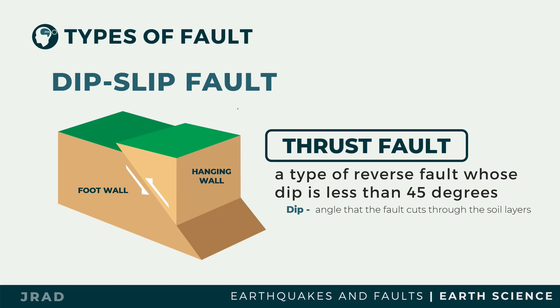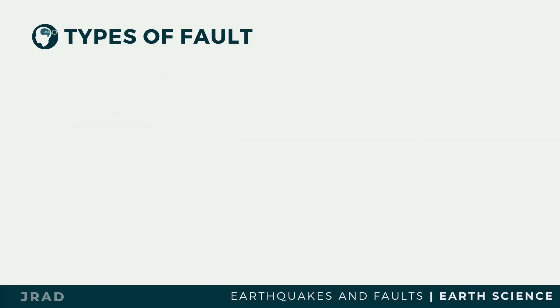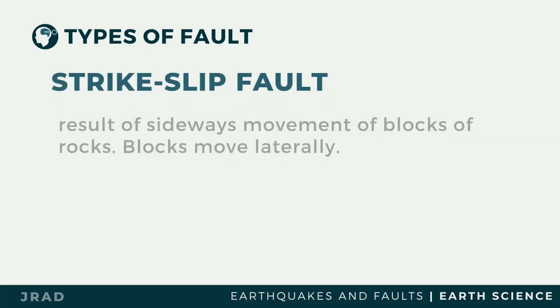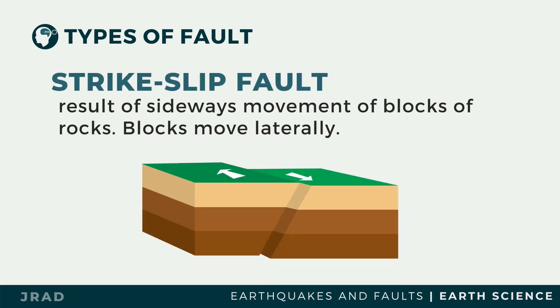A strike-slip fault is a result of the sideways movement of blocks of rocks. In a strike-slip fault, neither the hanging wall nor the foot wall is moving up or down. Rather, the blocks move laterally in opposite directions. A strike-slip fault can offset the flow of streams present in a given area.